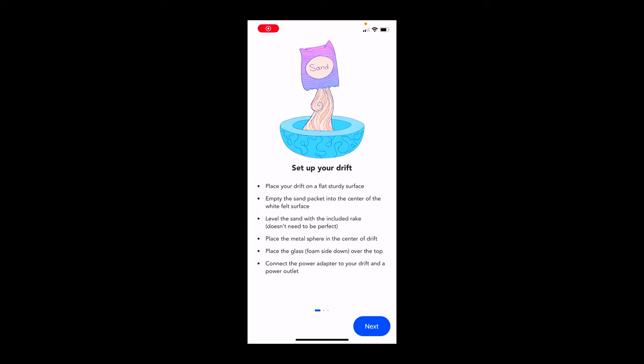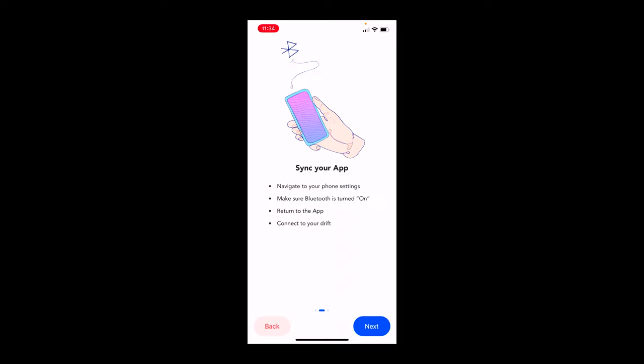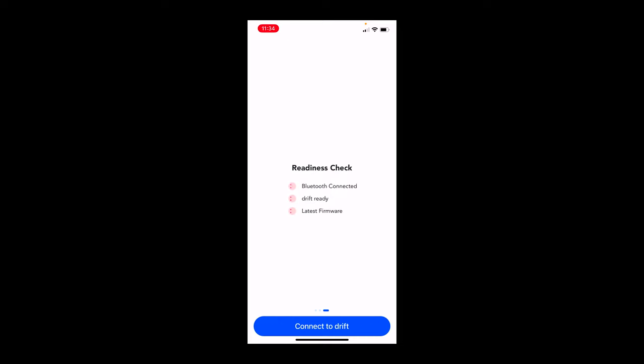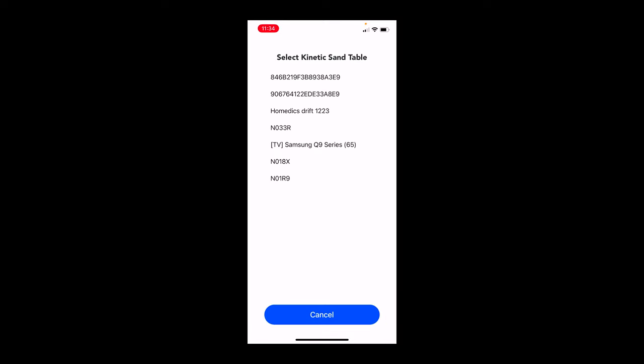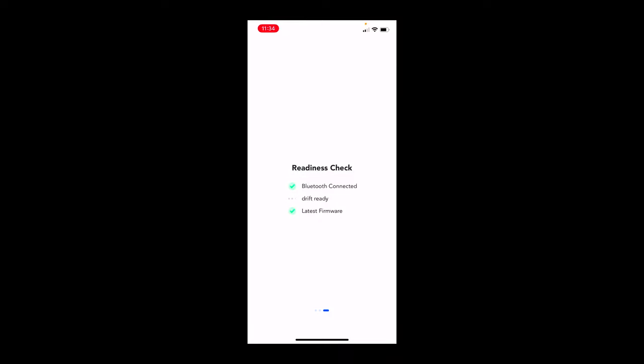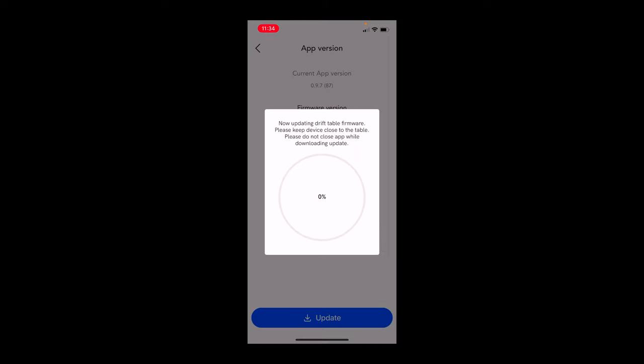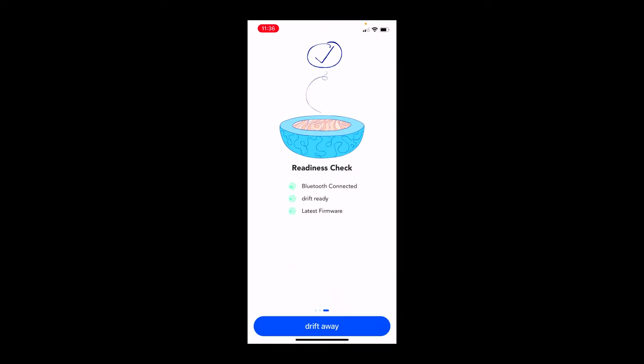We downloaded the Homedics Drift app. The app actually has the information on how to set up your drift here that we've already demonstrated. So we'll go through this turning our Bluetooth on. And we're going to try to connect to the sand table. Here it is. Connection is successful. Drift is ready. Latest firmware. Update firmware. This thing has a firmware update. So now it's updating its firmware. You can see this in real time. Our update is successful. Now we can drift away.